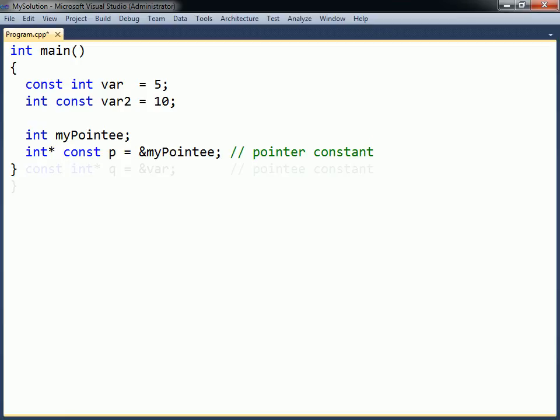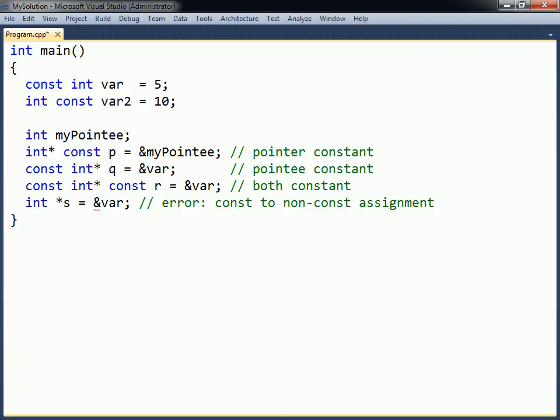Second, the pointee can be declared constant. This means that the variable pointed to cannot be modified through this pointer. It is also possible to declare both the pointer and the pointee as constant, to make them both read-only. Note that constant variables may not be pointed to by a non-constant pointer. This prevents programmers from accidentally rewriting a constant variable using a pointer.